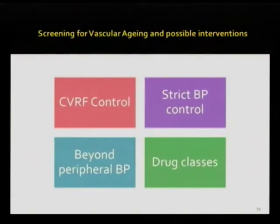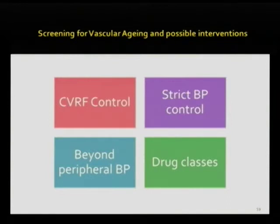For other interventions, which have been discussed here, the strict control of cardiovascular risk factors — particularly blood pressure — involves choosing drug classes that allow you not only to reduce peripheral blood pressure but more importantly to reduce central blood pressure, as seen for vasodilatory drugs and especially inhibitors of the renin-angiotensin system. These drugs not only vasodilate and reduce blood pressure but also aid with remodeling of the arterial wall structure.